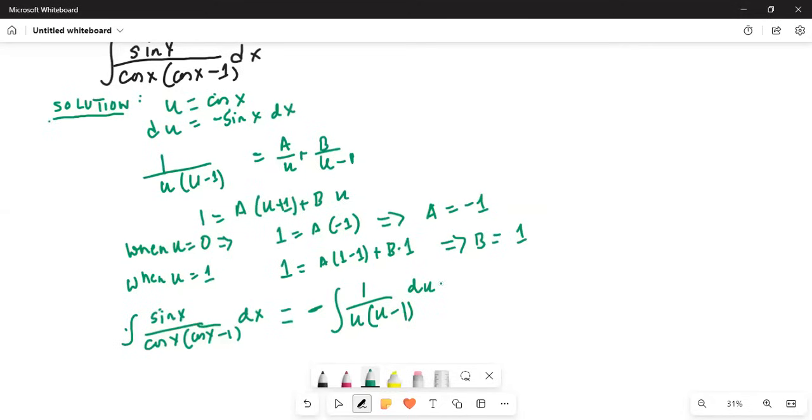Which we can write as, for A it is minus 1, so it is integration of 1 over u du, because there is a minus in front of it. And on top of this, this is minus.